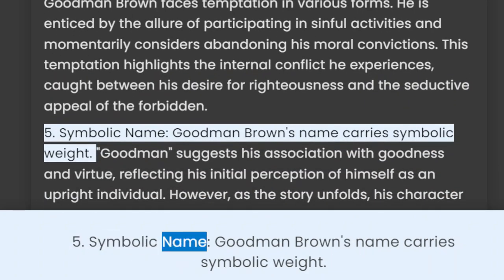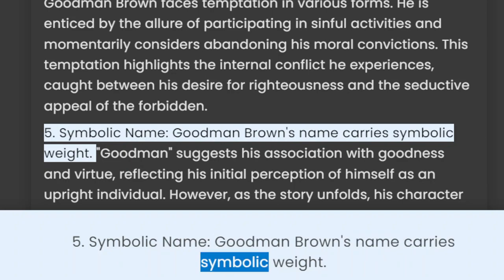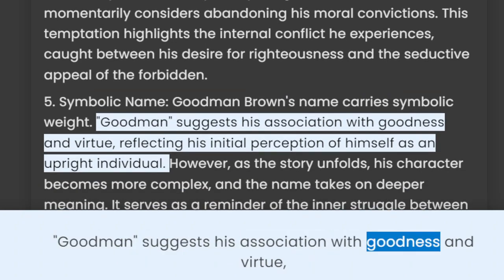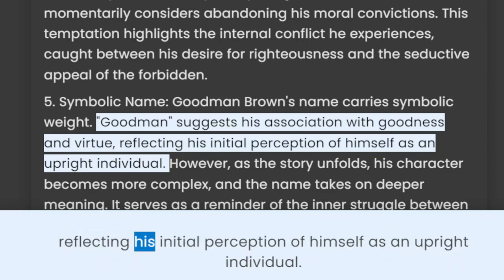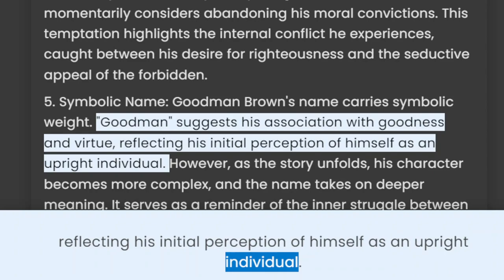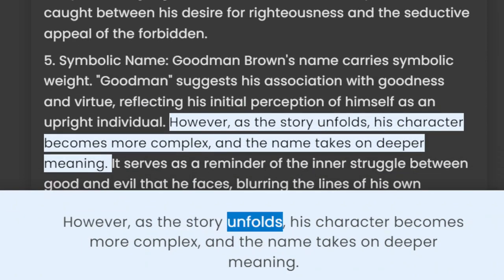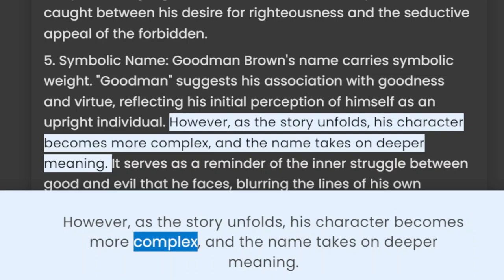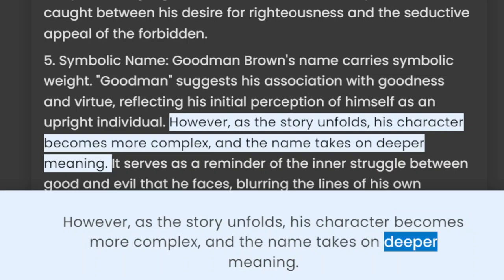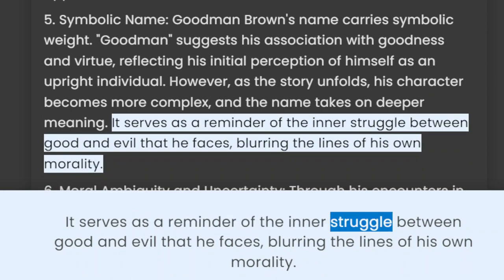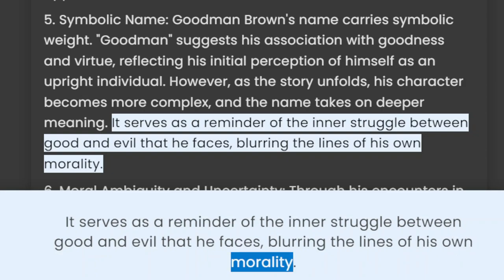5. Symbolic name. Goodman Brown's name carries symbolic weight. "Goodman" suggests his association with goodness and virtue, reflecting his initial perception of himself as an upright individual. However, as the story unfolds, his character becomes more complex and the name takes on deeper meaning. It serves as a reminder of the inner struggle between good and evil that he faces, blurring the lines of his own morality.